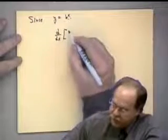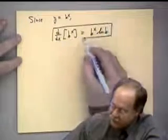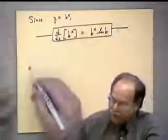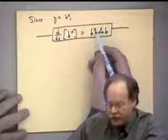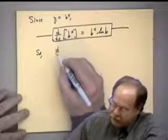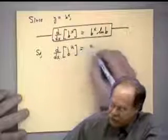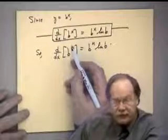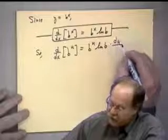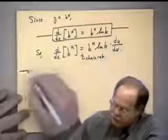The derivative of b to the x equals b to the x times the natural log of b. For the generalization: if we have a function u of x in the exponent, the derivative is b to the u times ln b times du/dx — the chain rule appended at the end. Remember to keep track of when the chain rule is being used.